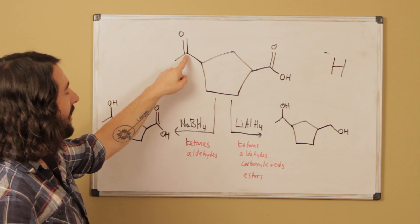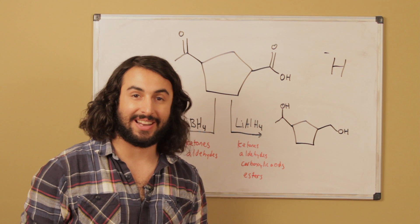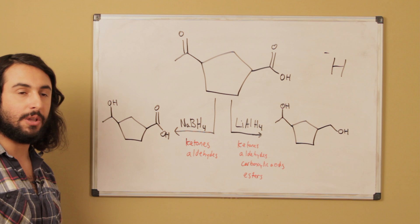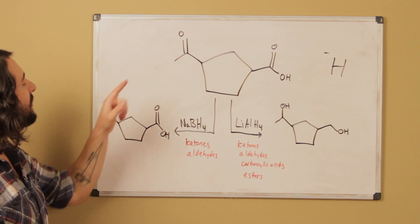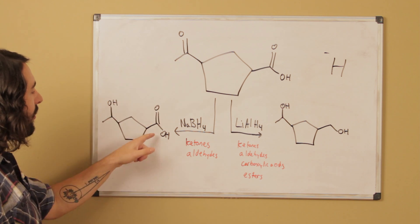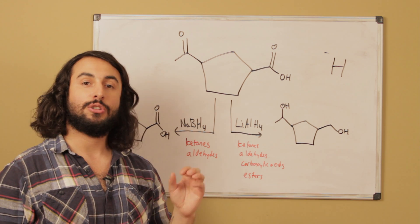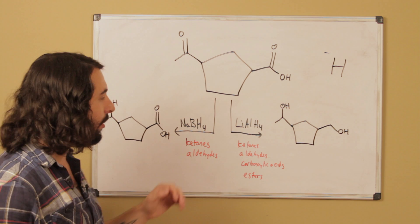So as a result, on the product after reducing with sodium borohydride, we can see that the ketone has been reduced to the secondary alcohol, whereas the carboxylic acid has been untouched. It does not have the ability to reduce the carboxylic acid, so that won't change.